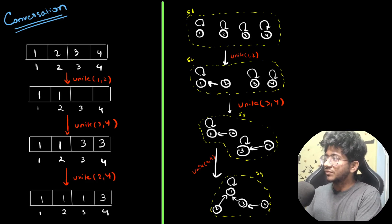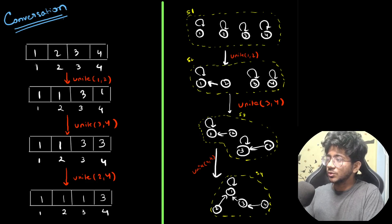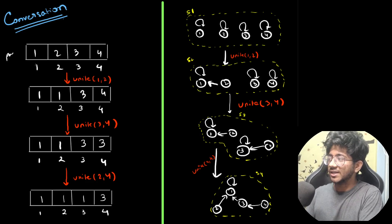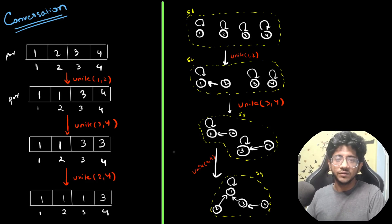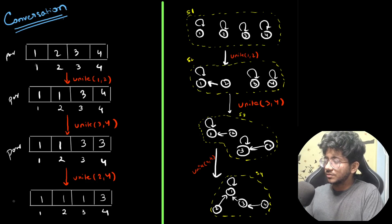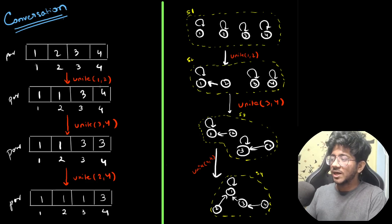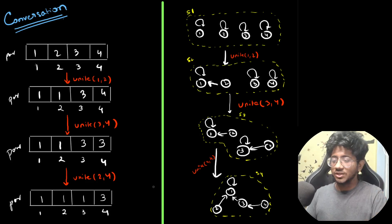Concretely, when we have elements one, two, three, four and we unite one and two, two's parent becomes one. Let's first focus on the parent array — we have the rank array too, but those can be handled similarly. When we unite three and four, four's parent becomes three, and then three's parent becomes one. So the chain that gets formed is: four → three → one, and two → one. That's how the parent array evolves through the process.